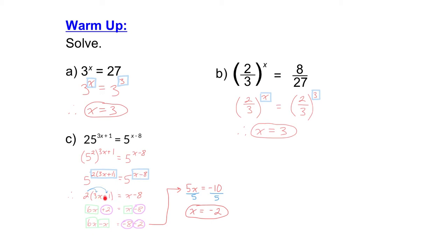Expand out the brackets. So 2 times 3x is 6x. 2 times 1 is 2. So I have 6x plus 2 on the left, x minus 8 on the right. Identify your like terms and collect them. So 6x minus x on the left, negative 8 minus 2 on the right. 6x minus x is 5x. Negative 8 minus 2 is negative 10. Divide both sides by 5 to get x by itself. We end up with x equals negative 2.